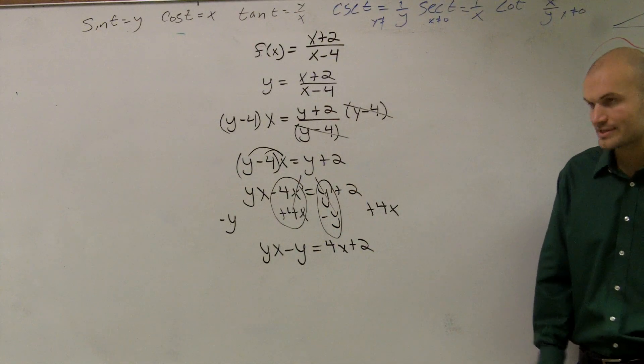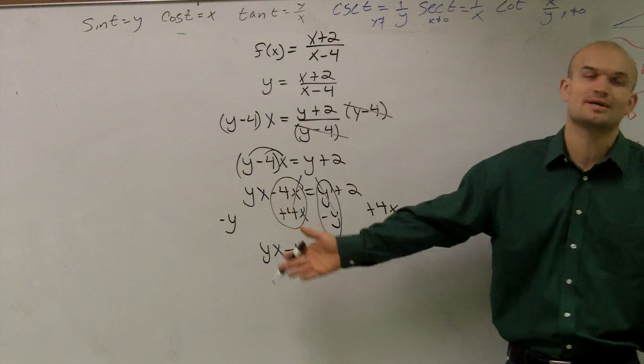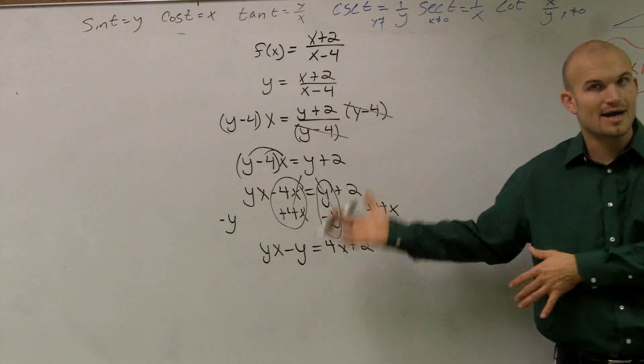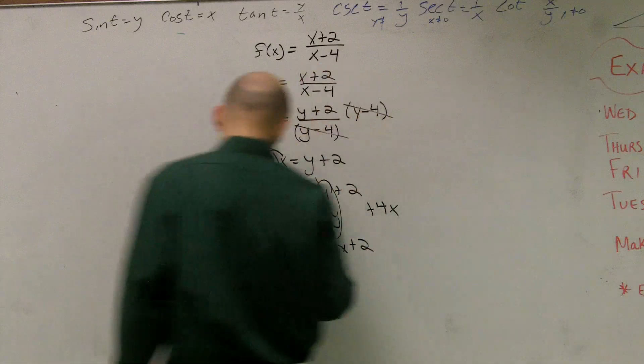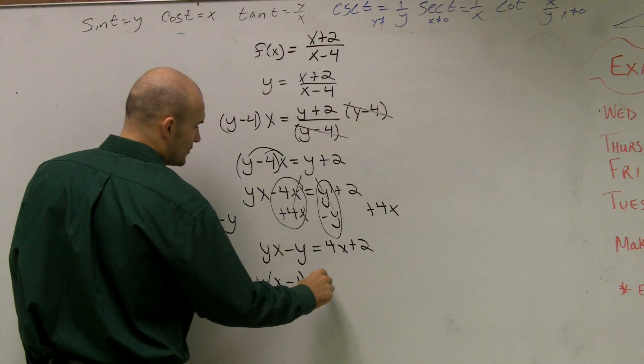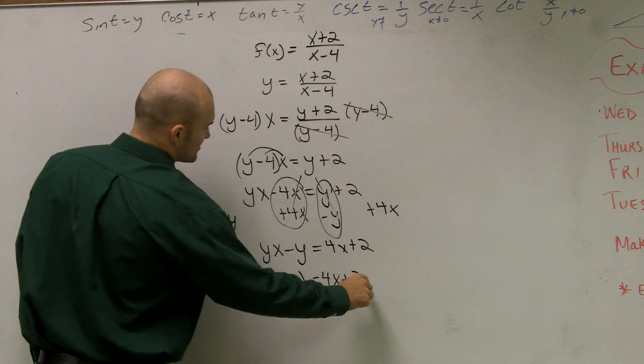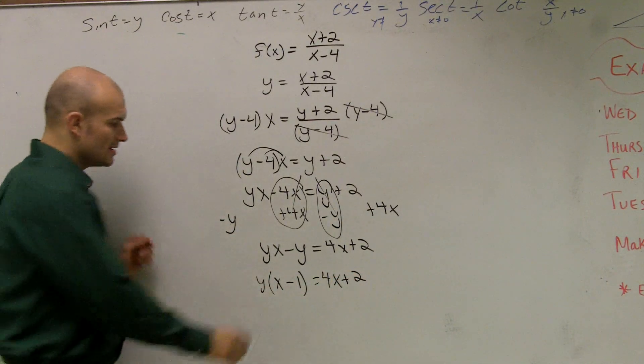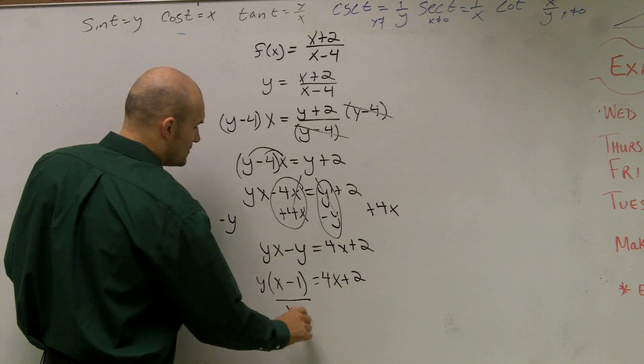So now, here it gets confusing. Well, how do you get these two y's to become 1? Well, what I can do is since both of these terms share a y, I can factor out a y. So if you factor out a y, I get y times x minus 1 equals 4x plus 2. And then you guys can see, oh, now I only have my 1y, so now I can divide by x minus 1.